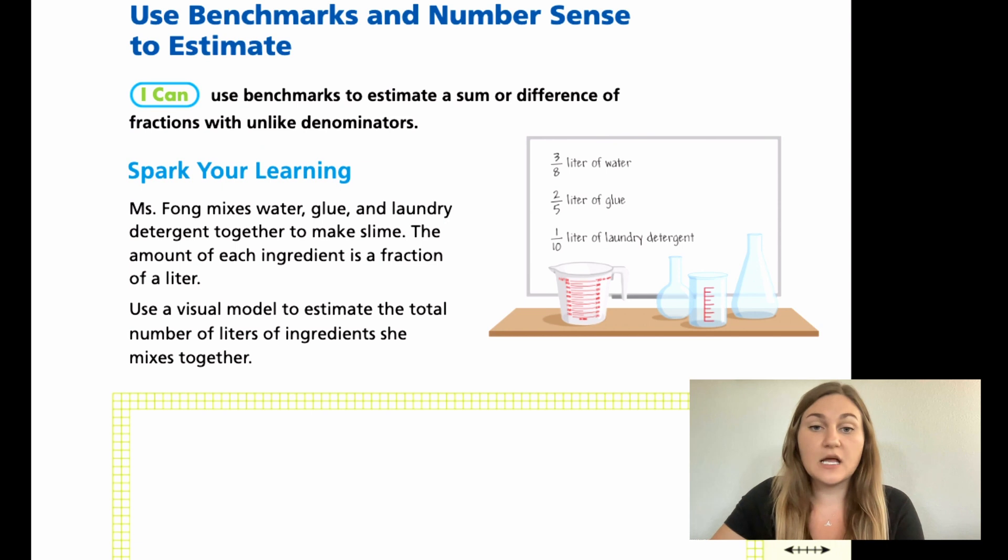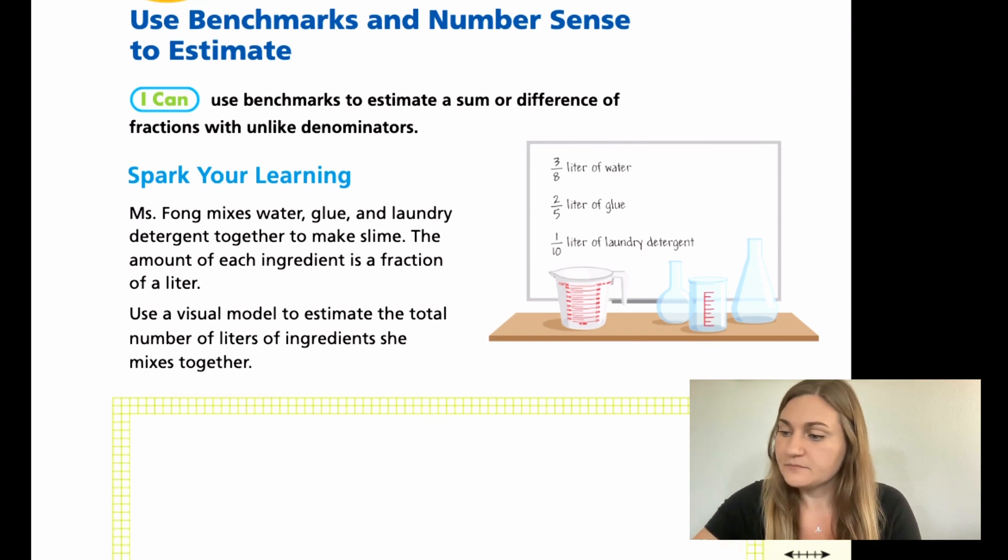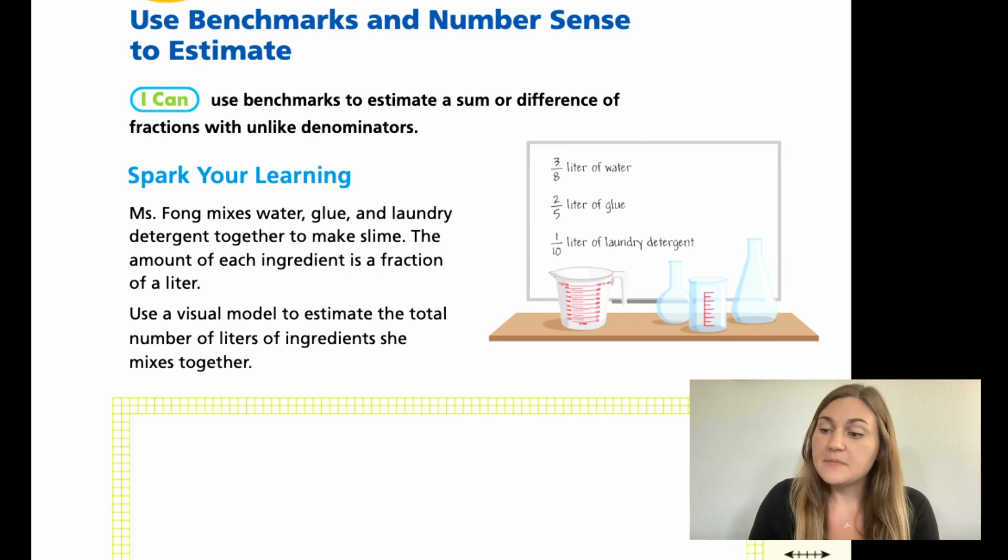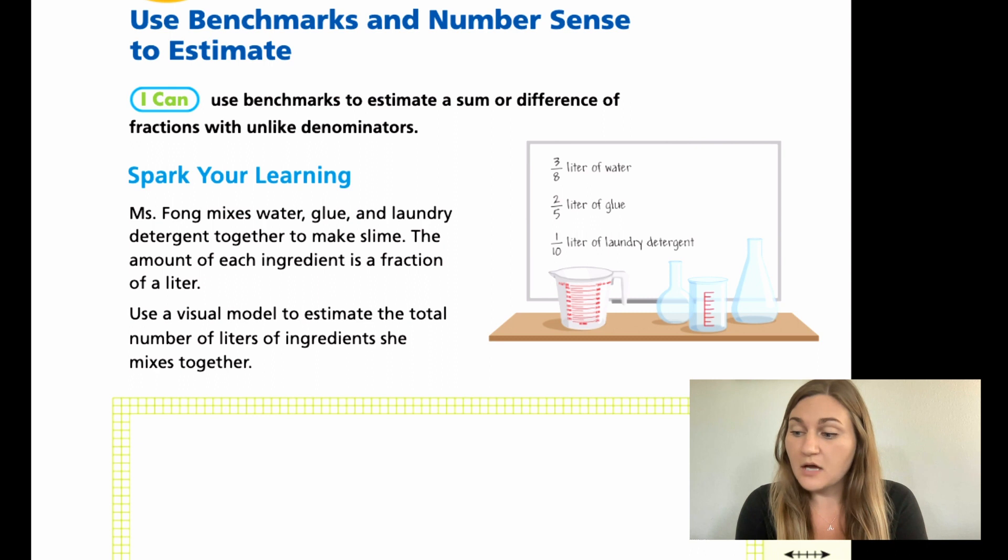Now jumping into the lesson on page 149, we start with a word problem that says Mrs. Fong mixes water, glue, and laundry detergent together to make slime. The amount of each ingredient is a fraction of a liter. Use a visual model to estimate the total number of liters of ingredients she mixes together.